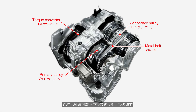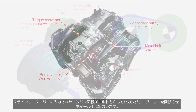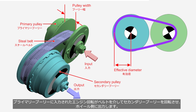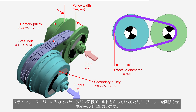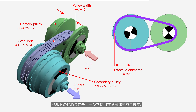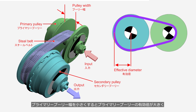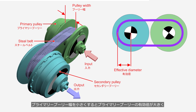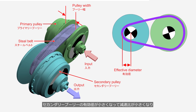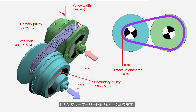CVT stands for Continuously Variable Transmission. It shifts speeds using two sets of pulleys and a metal belt, with a torque converter used as the launch device. The engine rotation is transmitted to the primary pulley, which rotates the secondary pulley via a metal belt, transferring power to the wheels. Some CVT models use a chain instead of a metal belt. Reducing the primary pulley width causes an increase in the effective diameter of the primary pulley and a decrease in the effective diameter of the secondary pulley, resulting in a lower reduction ratio and higher rotational speed of the secondary pulley.